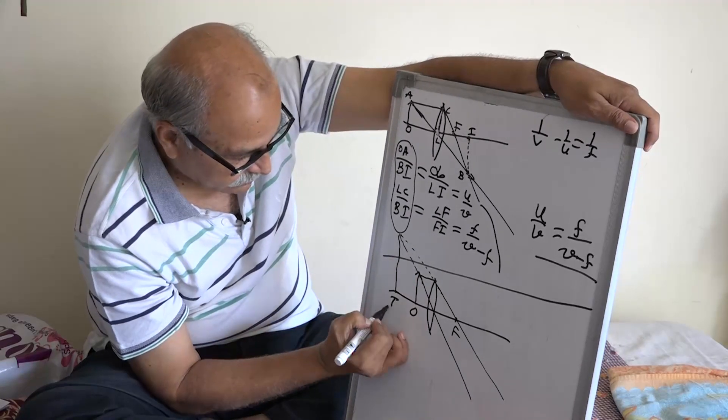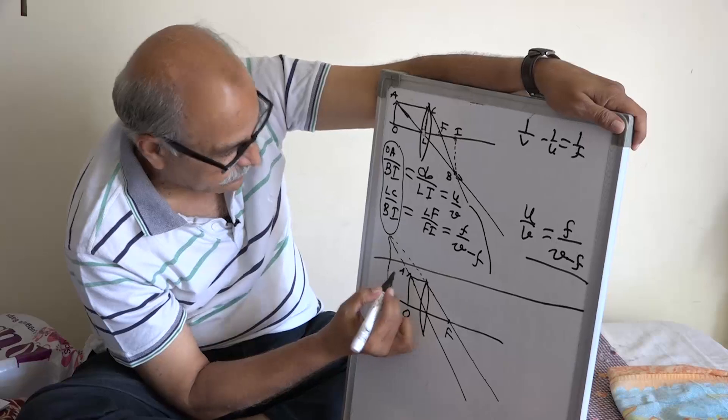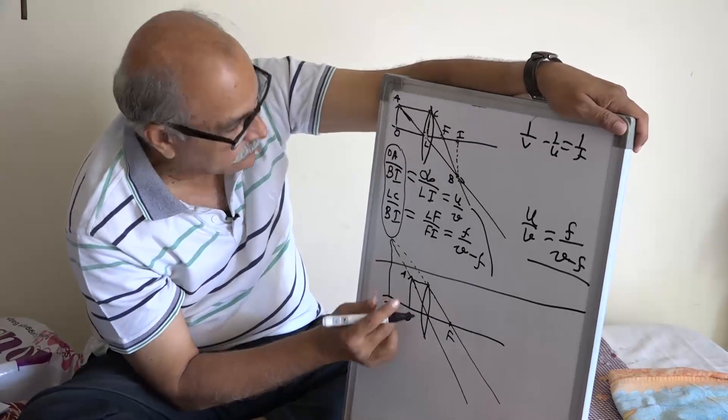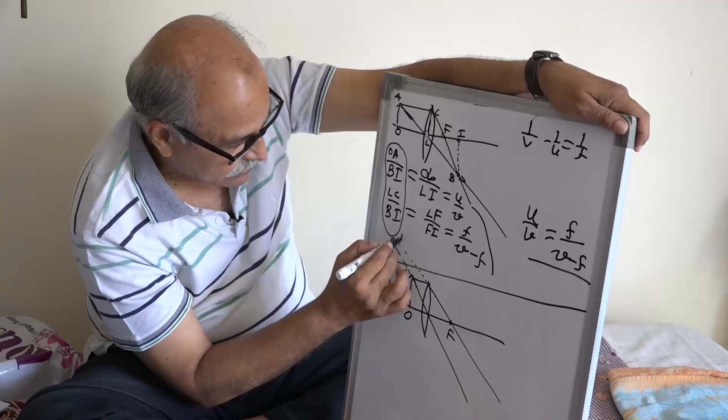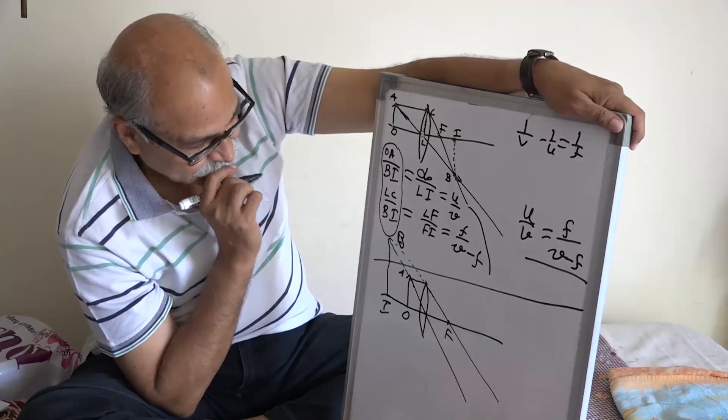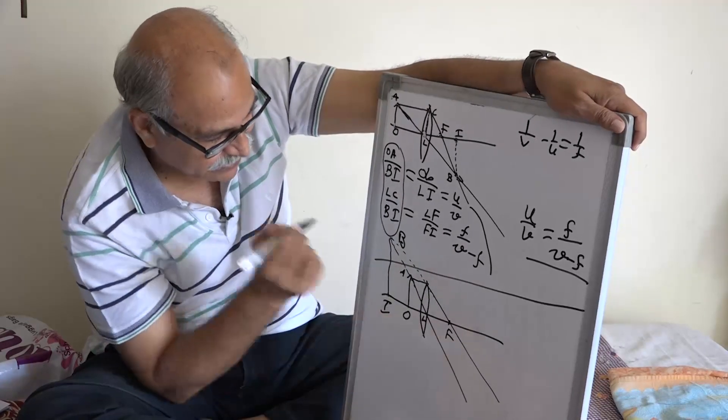They meet and here is the image. This point is I, this point is A and this point is O,A and then B. This point is B here, image, this is L, this is F.